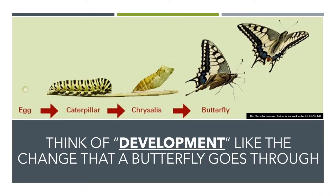You can think of development like the change that a butterfly goes through. It starts out as an egg, and then as it develops — as it grows and changes — it becomes a caterpillar. Then it goes from being a caterpillar to forming a chrysalis, and from there it develops into a butterfly. Much like the caterpillar going through those stages, characters in our stories, in our novels, and in TV shows grow and change — they go through what we call character development.